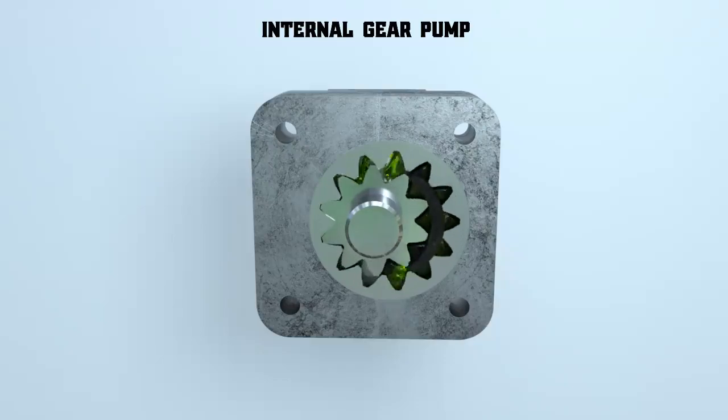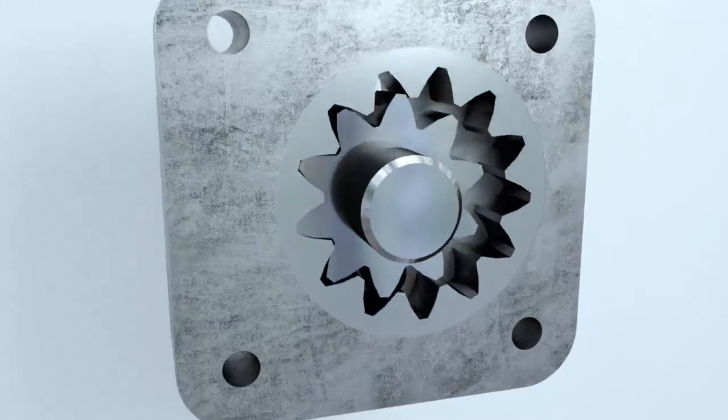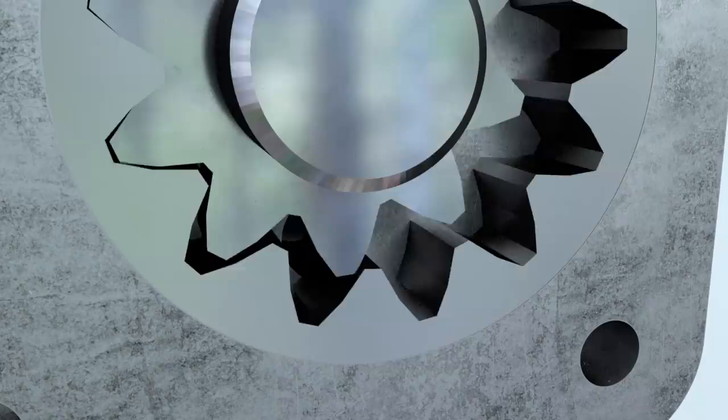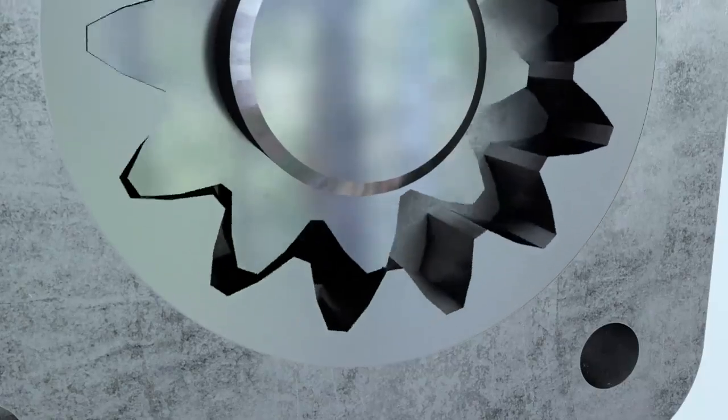Let's take a closer look at how an internal gear pump functions. The suction channel is located at the point where the gear teeth come out of the mesh and the discharge channel is located at the point where they go into the mesh.